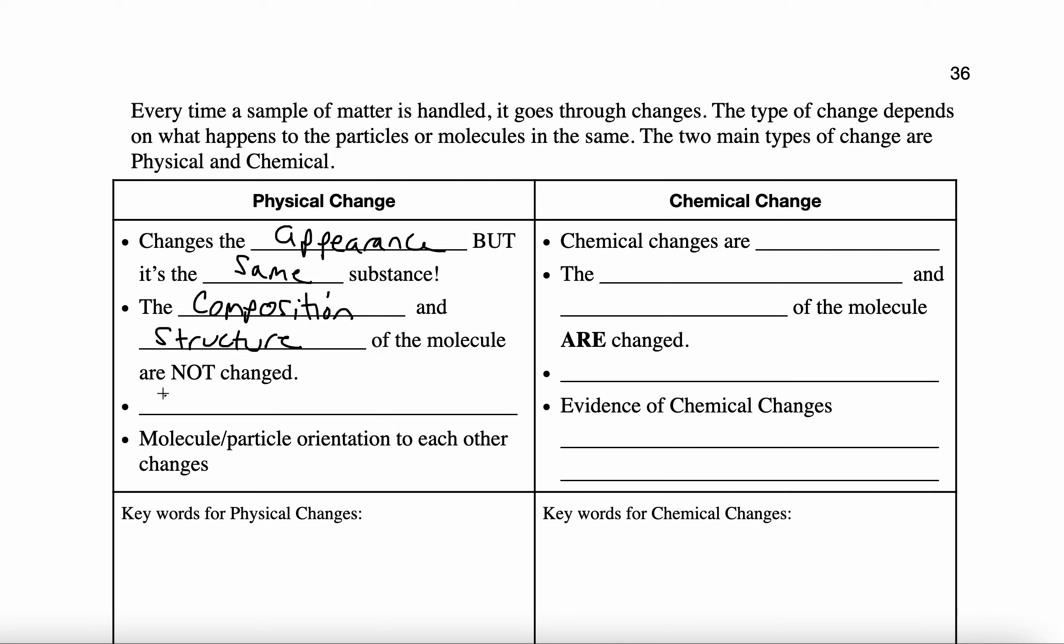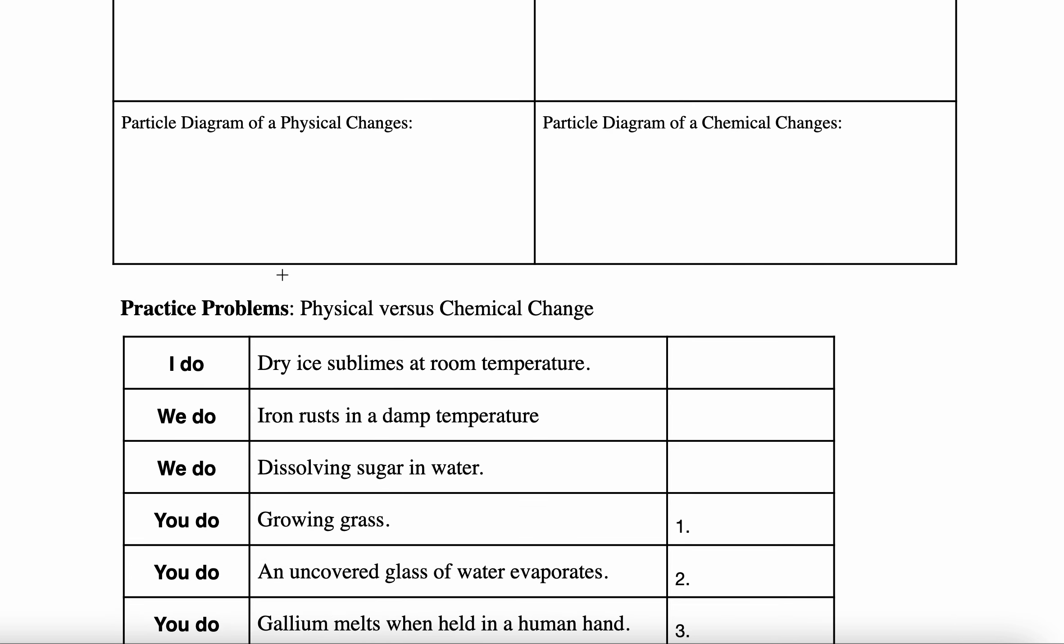Even though it may look a little bit different, it will have the same name and formula as it did before the change. Typically what happens is that the molecule or particle orientation changes in reference to each other. I'm going to look at the particle diagram. Take a look. I start off with a particle, and these are each of the particles in the sample. Notice how I'm drawing them.